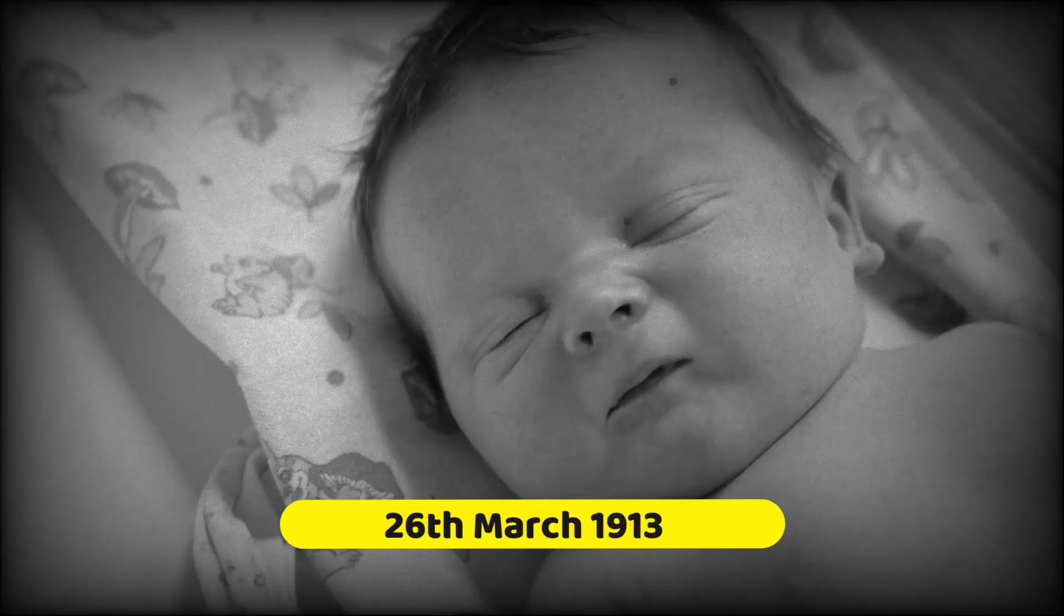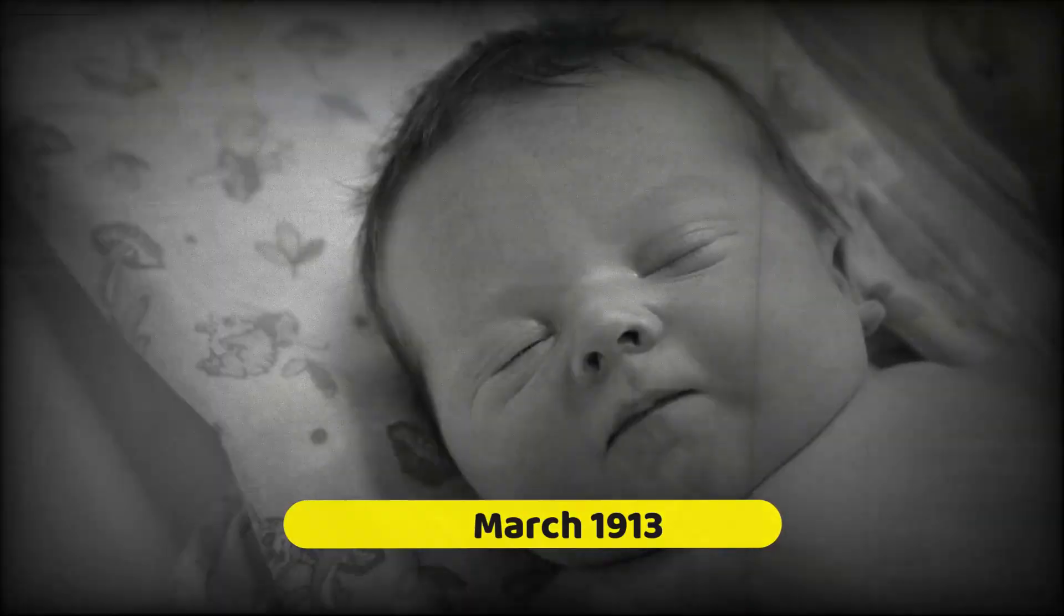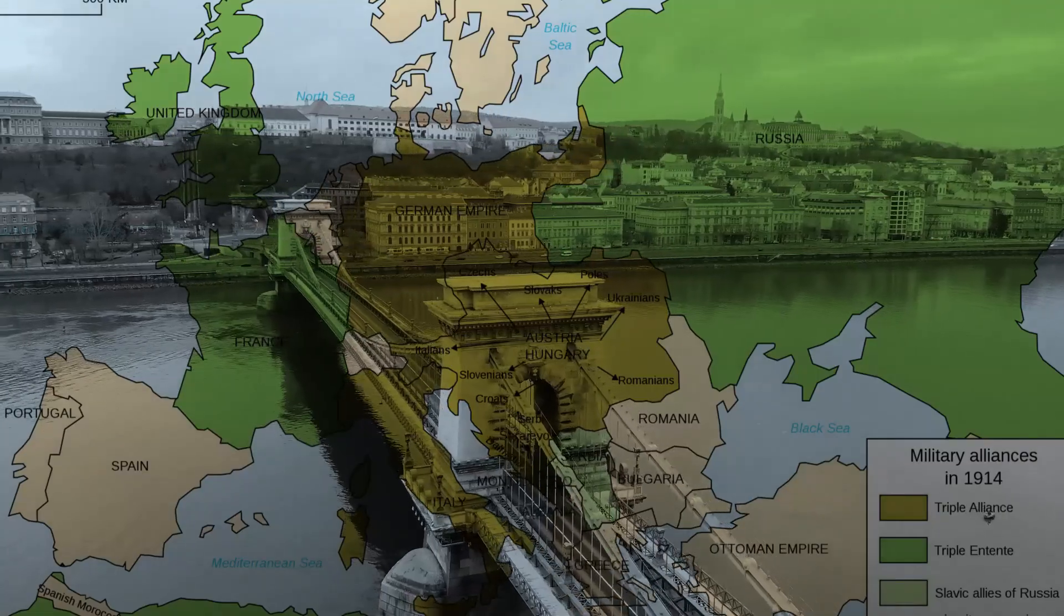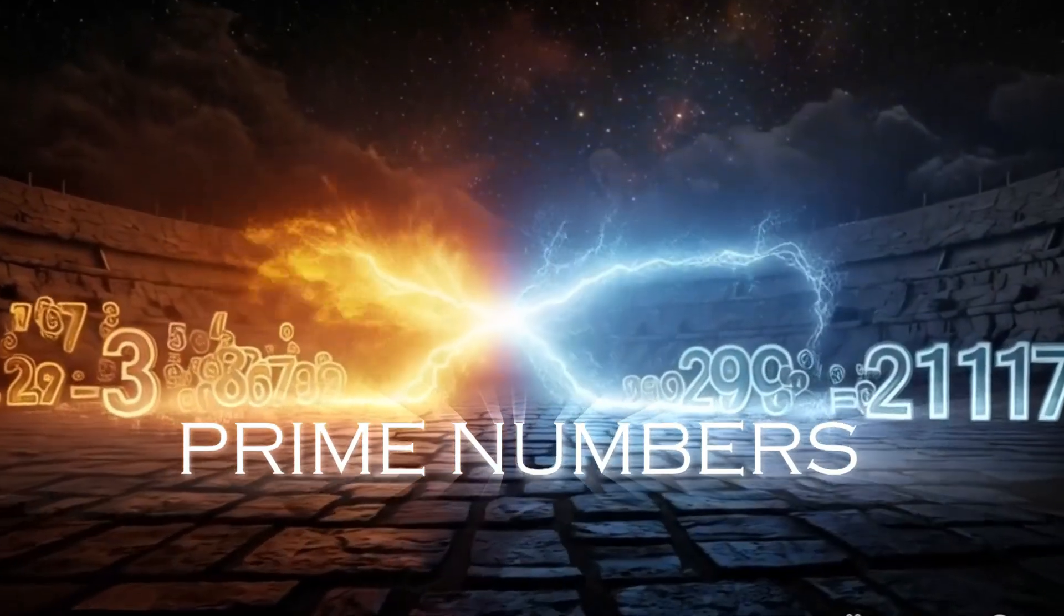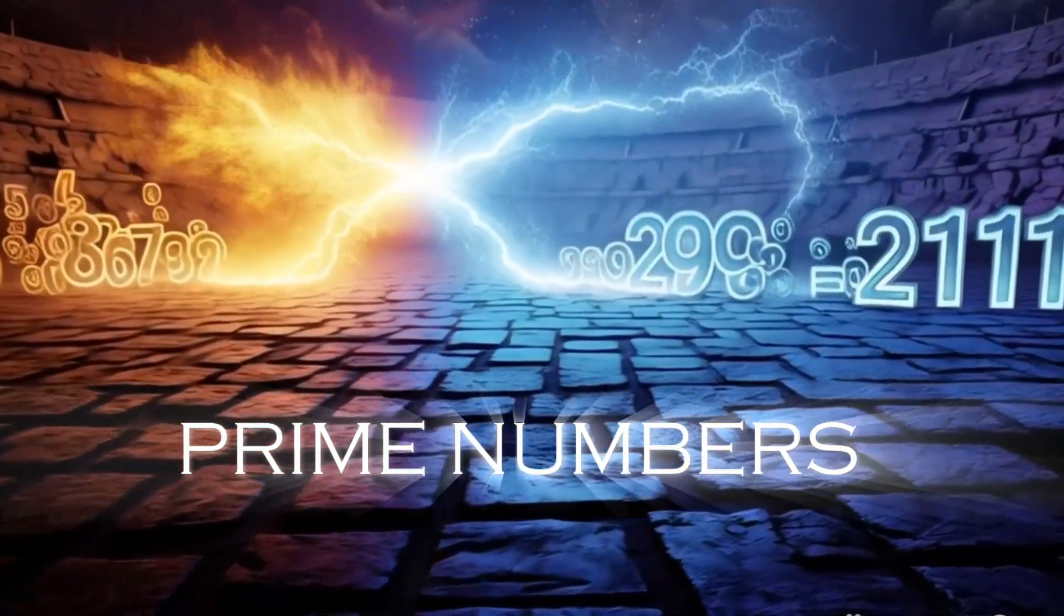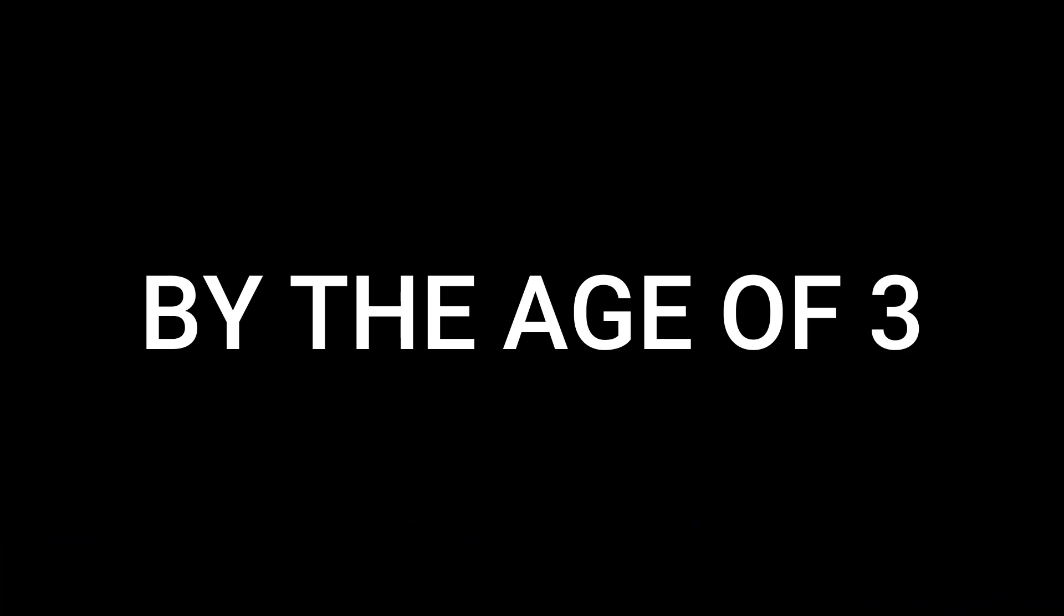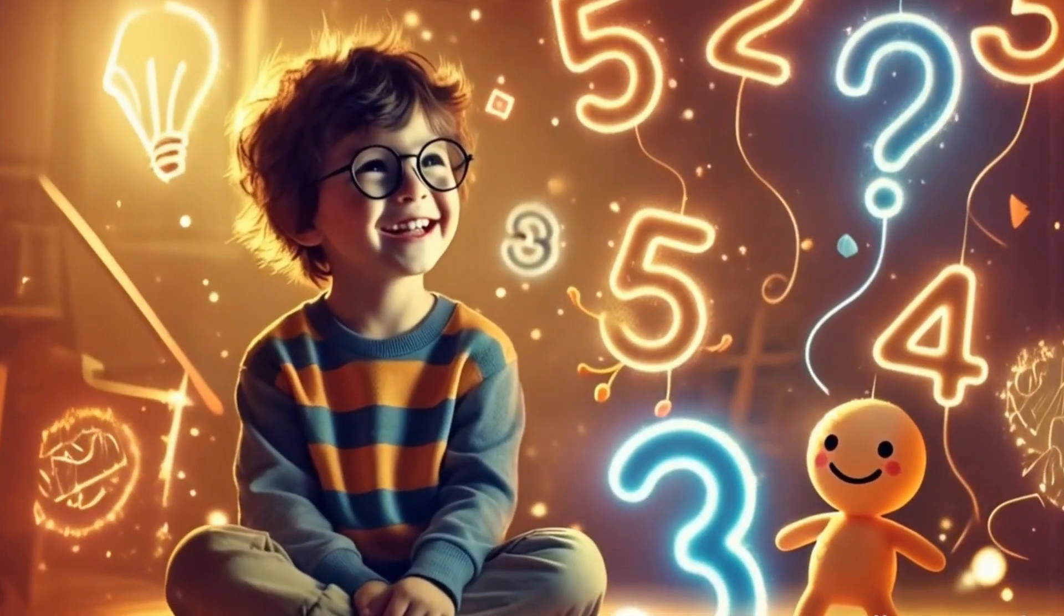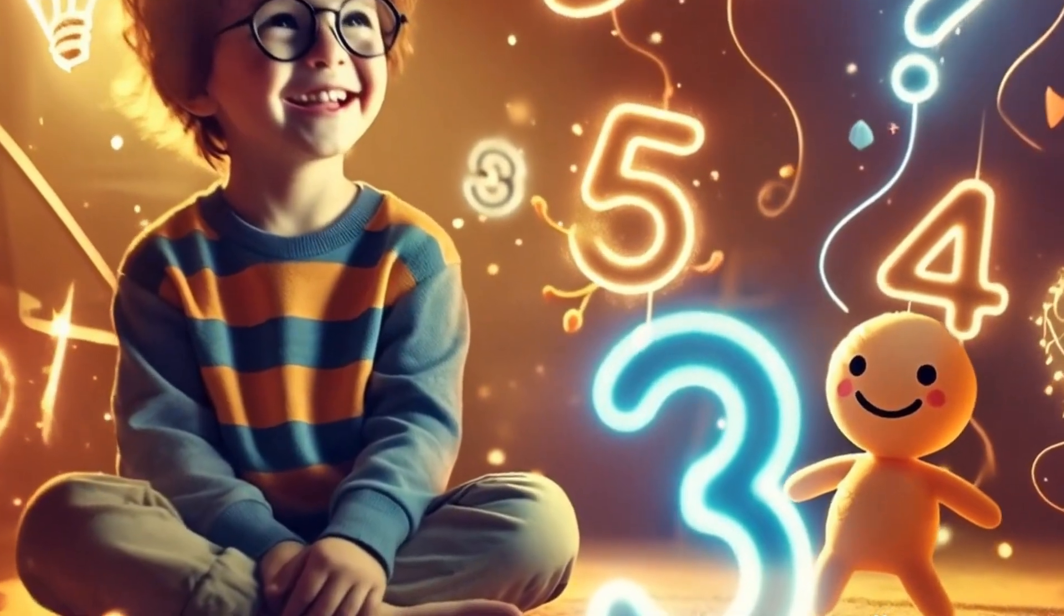Paul Erdos was born on March 26th, 1913 in Budapest, Hungary, into a world on the brink of war. But the only battles he cared about were the ones between prime numbers. By the age of three, he could tell you how many seconds someone had been alive, without using a pen or paper. By four, he had discovered negative numbers on his own. Numbers weren't just a subject to study, they were his friends.